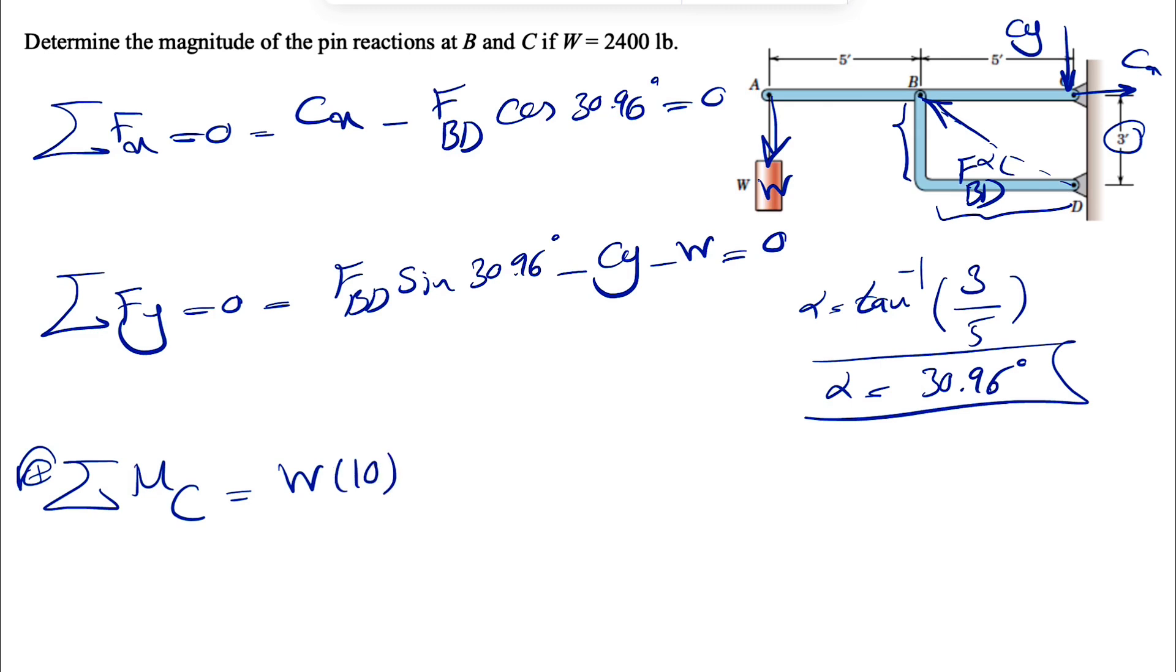And we're going to have the moment of FBD. But if we look at it, only the X component of FBD, this will be the Y component. As we can see, only this component is going to make moment, which is going to be, again, counterclockwise. So this one's positive.